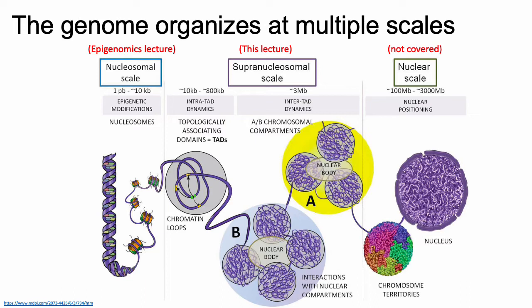At an even higher level than TADs, entire TADs can consist of either regions of the genome that tend to be highly associated with transcriptionally active elements, or regions where most of the TAD is transcriptionally inactive. Multiple TADs can group together and interact with each other. Groups of TADs that are transcriptionally active are called the A compartment, whereas groups that represent transcriptionally inactive regions are called the B compartment.